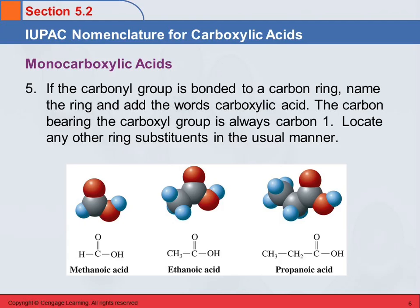You can also have a carboxylic acid with a ring in it. What we do is name the ring and add the words 'carboxylic acid.' If the carboxyl group is bonded to the carbon ring, you name the ring and then add 'carboxylic acid.' Whichever carbon in the ring has the carboxyl group on it is going to be number 1, and then you name the other substituents as usual.